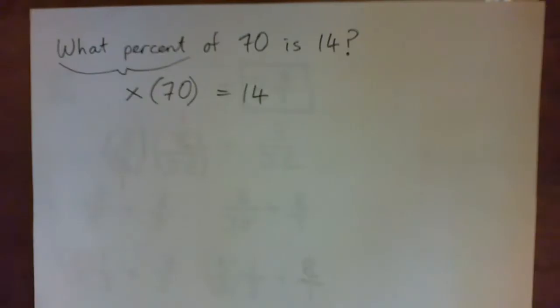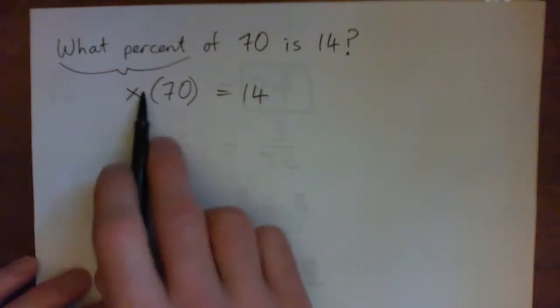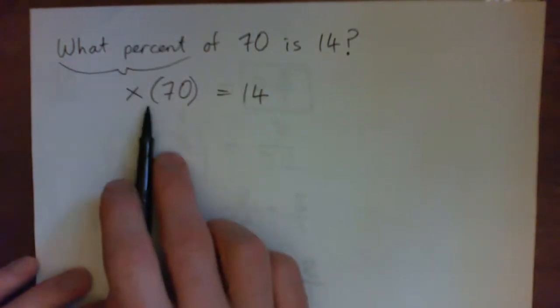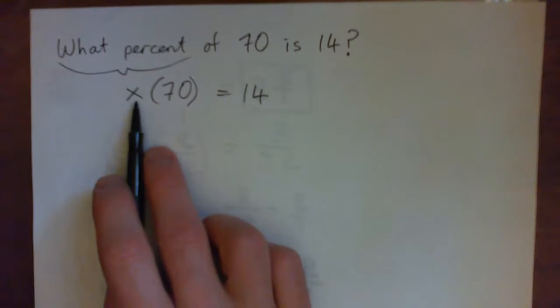So that's turning the sentence into an equation. We have some unknown thing. The x is the percentage. By the way, this is going to look like a decimal, and then we have to turn the decimal into a percent. But we can do that.